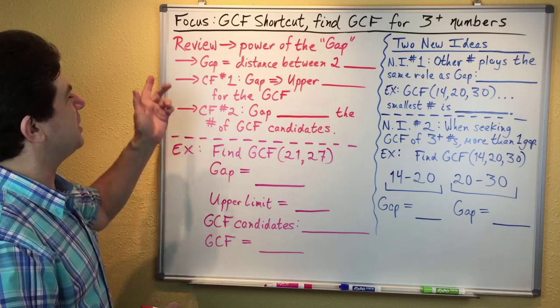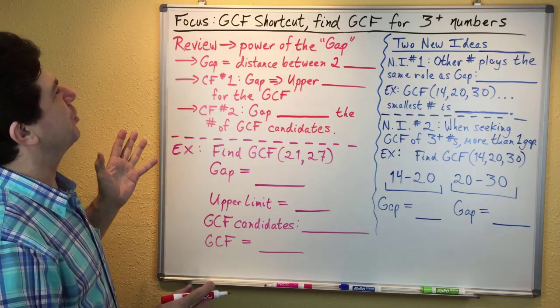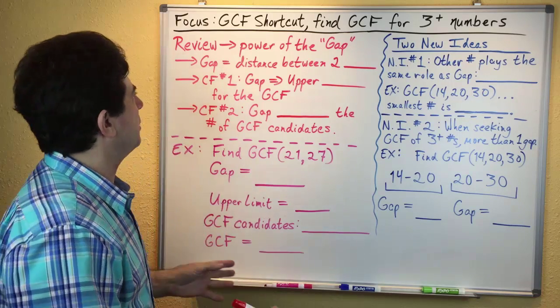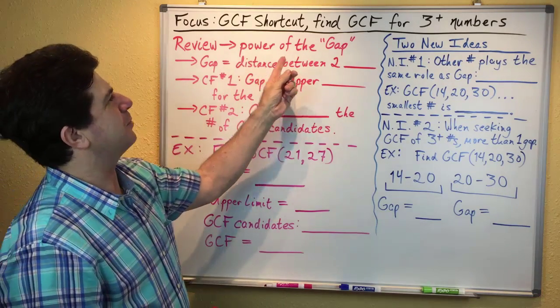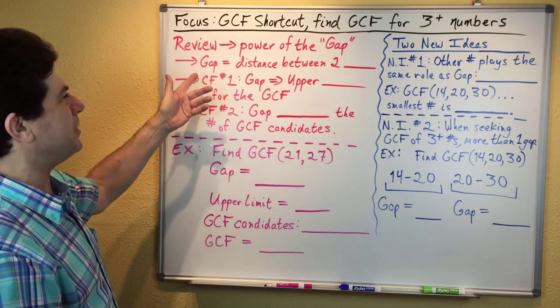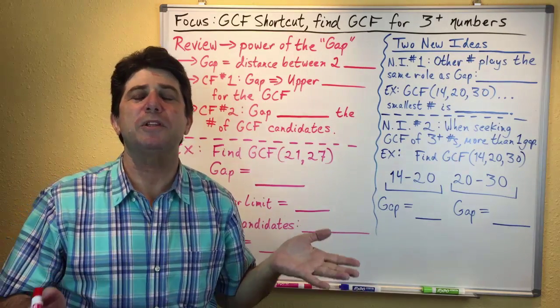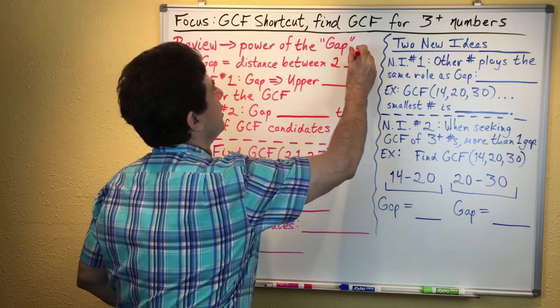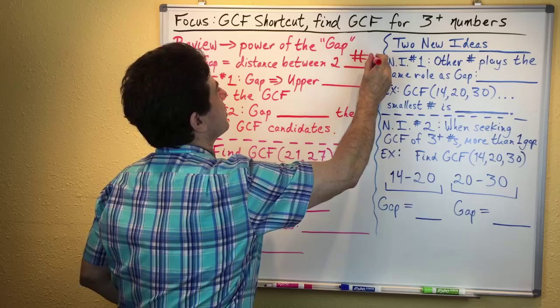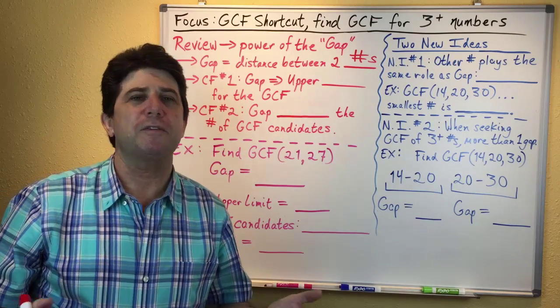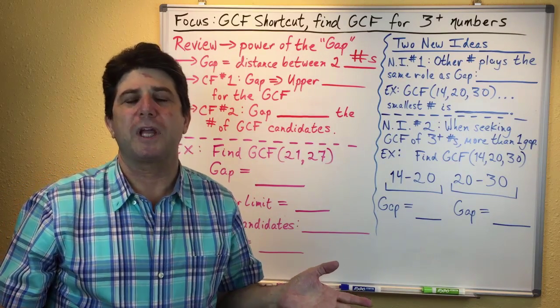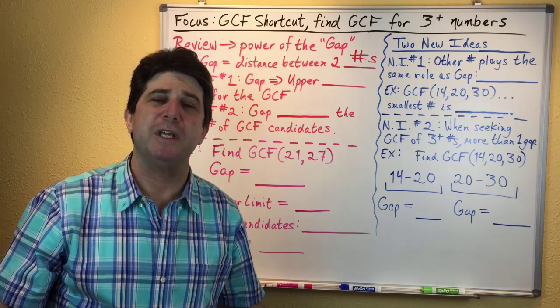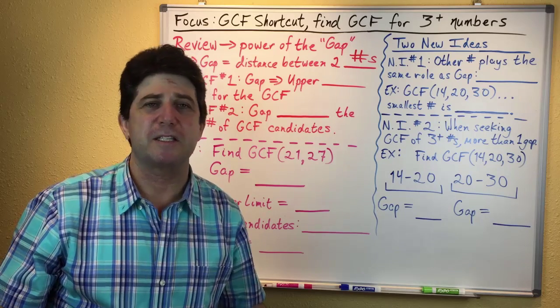First, I want to review the key idea that was at the heart of the shortcut. The key idea is a concept called the gap. The gap is simply the distance between the two numbers whose GCF you're trying to find. For example, if you're trying to find the GCF for 8 and 14, 14 minus 8 is 6, so the gap is 6.